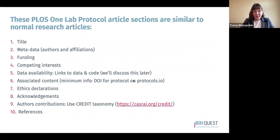There are a number of sections of the template that are very similar to normal research articles. These include the title, metadata — which is authors and affiliations — the funding statement, competing interests, data availability with links to data and code, associated content (with a minimum requirement of a DOI for your protocol deposited on Protocols.io), ethics declarations, acknowledgements, author contributions (encouraged to use the CRediT taxonomy), and references.